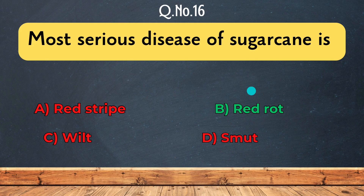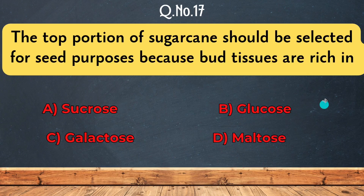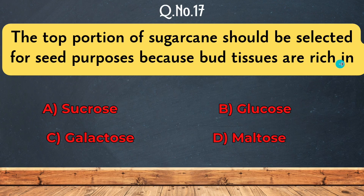Question 17: The top portion of sugarcane should be selected for seed purposes because both tissues are rich in — sucrose, galactose, maltose, or glucose.